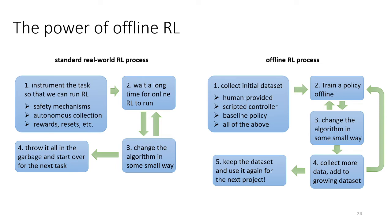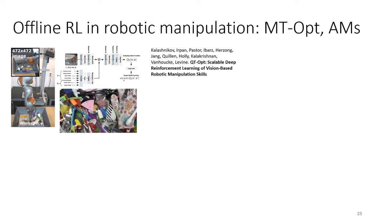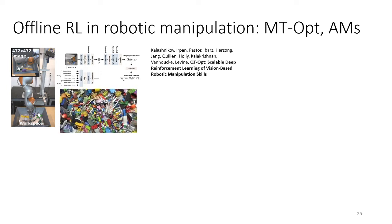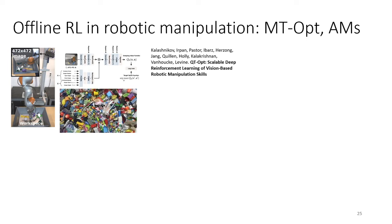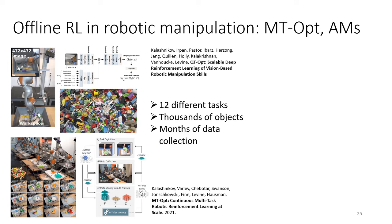I'll illustrate this with a few examples from some of my own research with colleagues at Google and at UC Berkeley. In 2018, we had a large project on real-world reinforcement learning with Q-learning for robotic grasping. More recently in 2021, we extended this system to handle multiple tasks — 12 different tasks, several thousand different objects, and months of data collection. Once we had that data, we had a hypothesis we wanted to test.